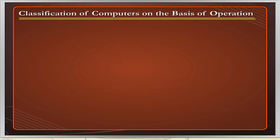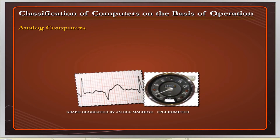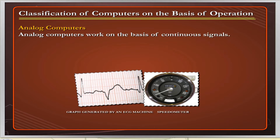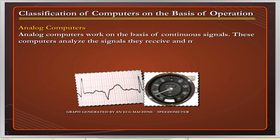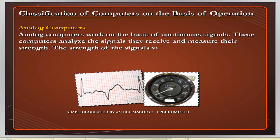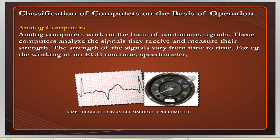Analog Computers work on the basis of continuous signals. These computers analyze the signals they receive and measure their strength. The strength of the signals varies from time to time. For example, the working of an ECG machine, speedometer, etc.